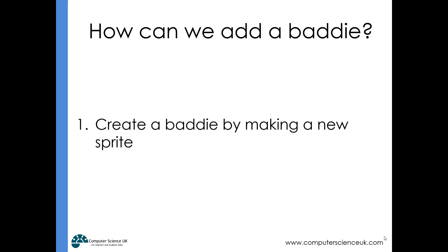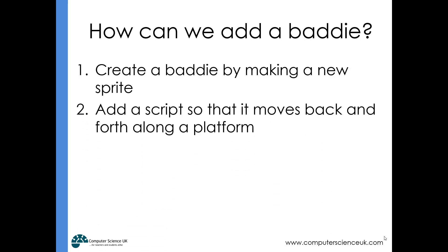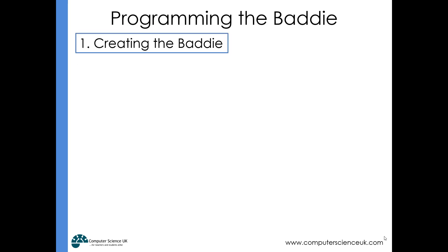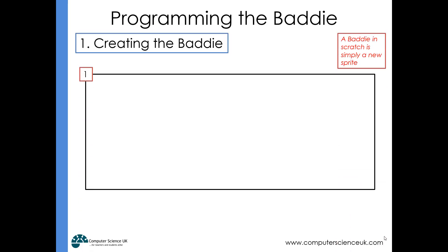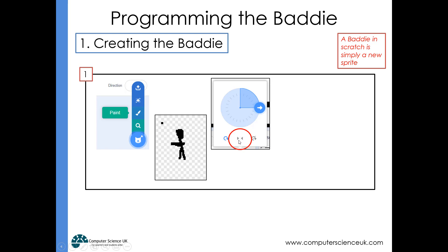To add a baddie, we create a new sprite and add a script so that it moves back and forth along a platform over and over again. A baddie is just a new sprite, so we paint a new sprite.